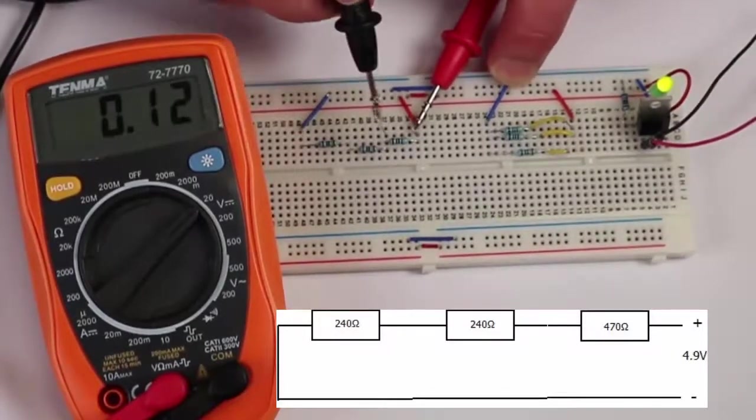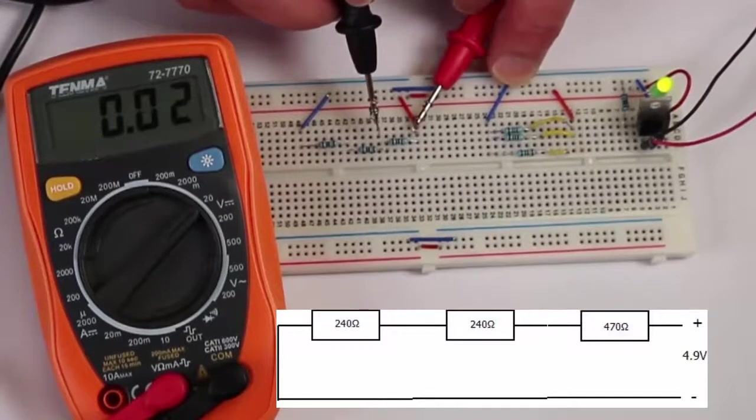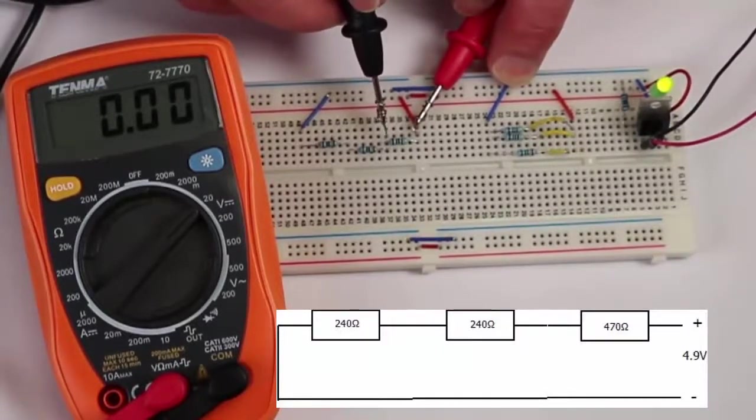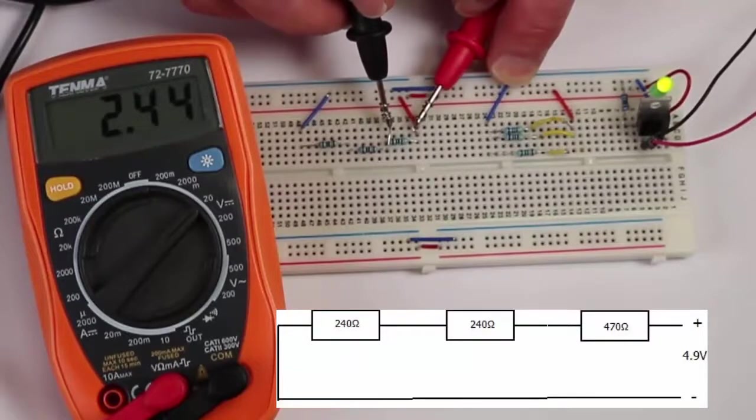So now we just check the voltage across each of the three resistors. We've got a 4.7k ohm resistor here and it's 2.44.